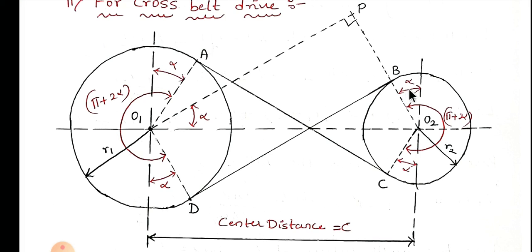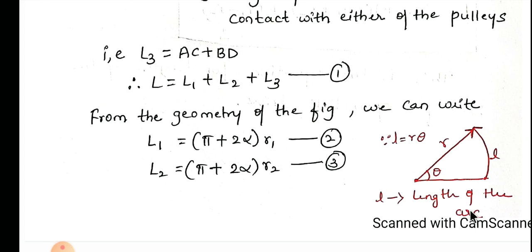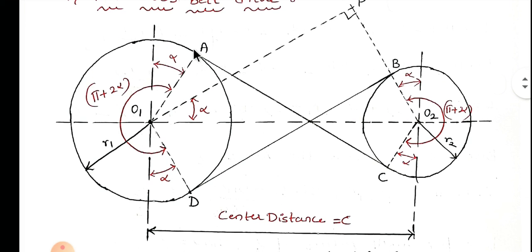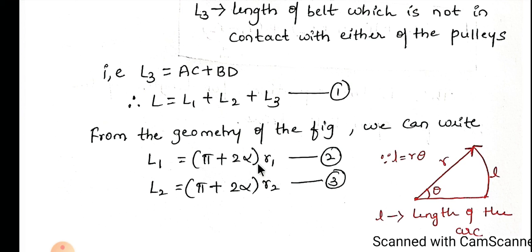Similarly, the angle between points C and D is also π + 2α. Using the arc length formula — arc length equals angle multiplied by radius — from point A to point D we know the angle is π + 2α and the radius is r1. Therefore L1 is equal to r1 multiplied by (π + 2α).